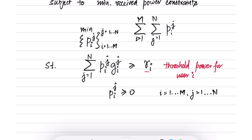This is an example of a problem we have formulated, and you can see that it is indeed a linear program because the constraints and the objective are all linear in the optimization variable p_ij. We were minimizing the total transmitted power while ensuring that each user gets the minimum amount of power stipulated.